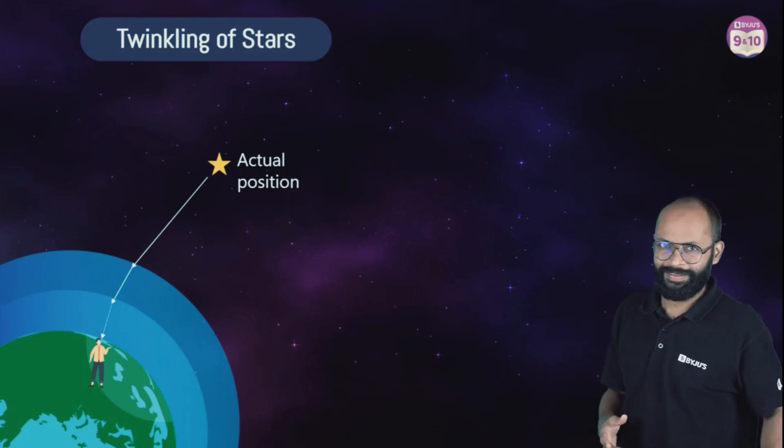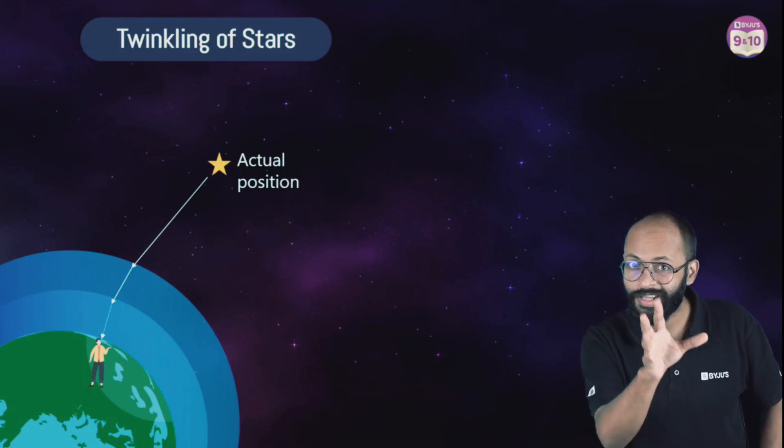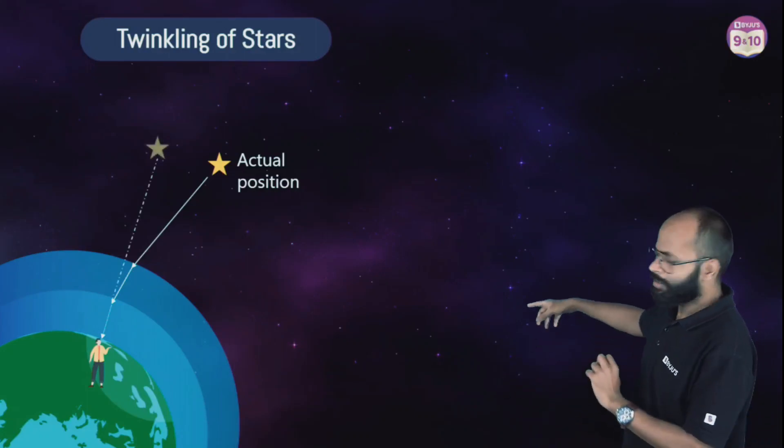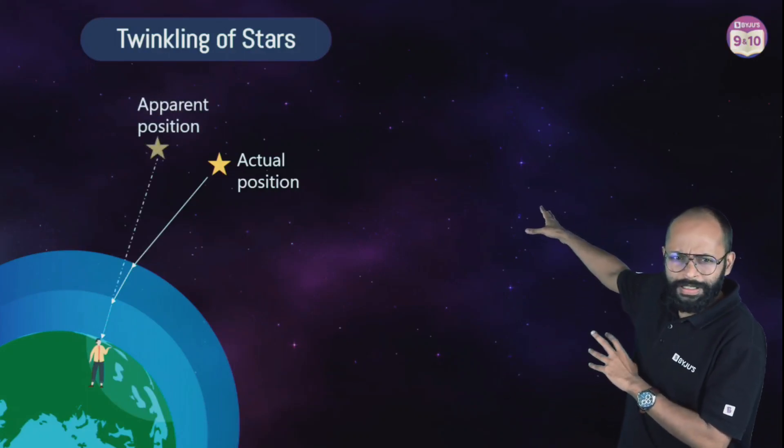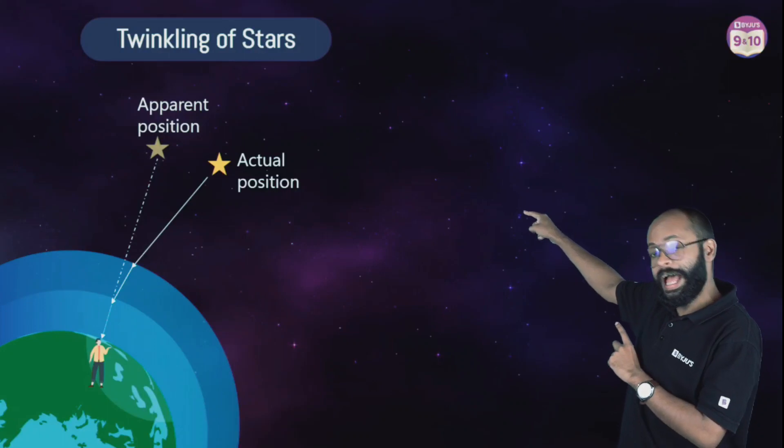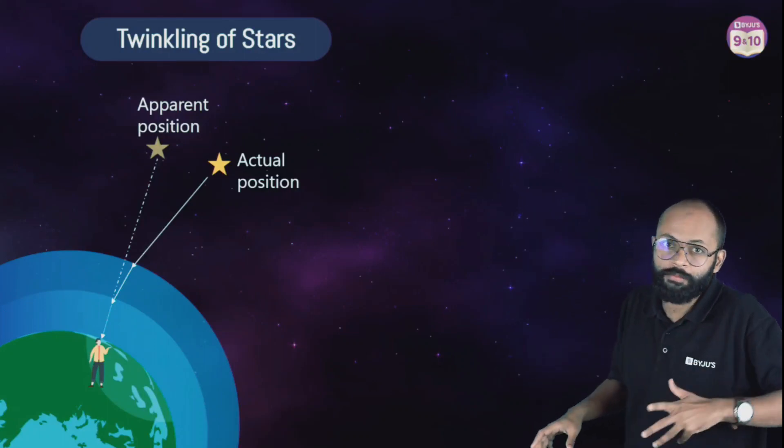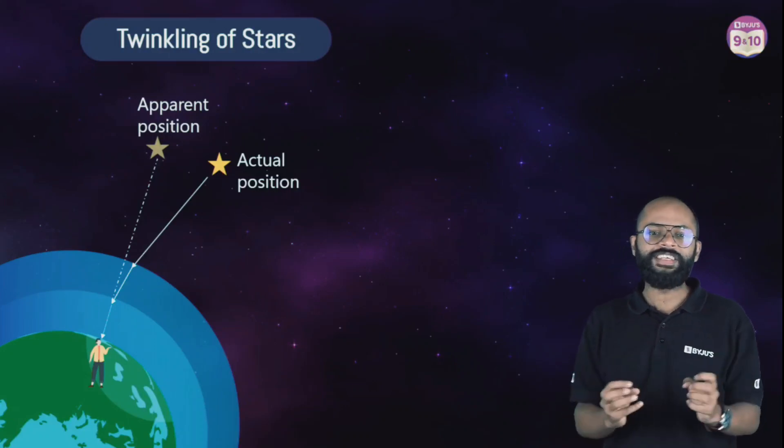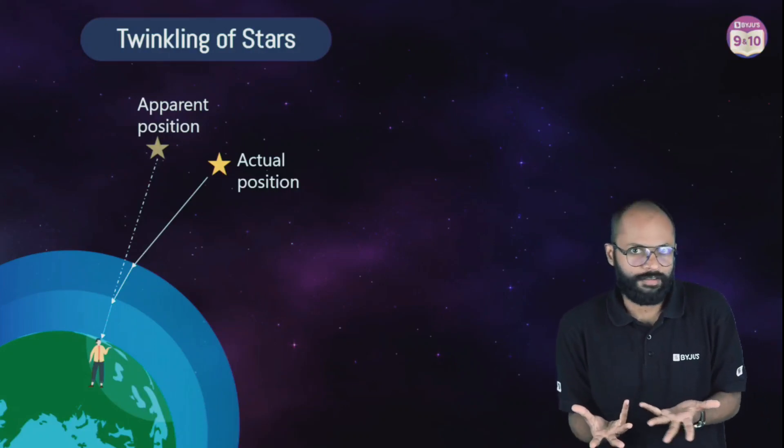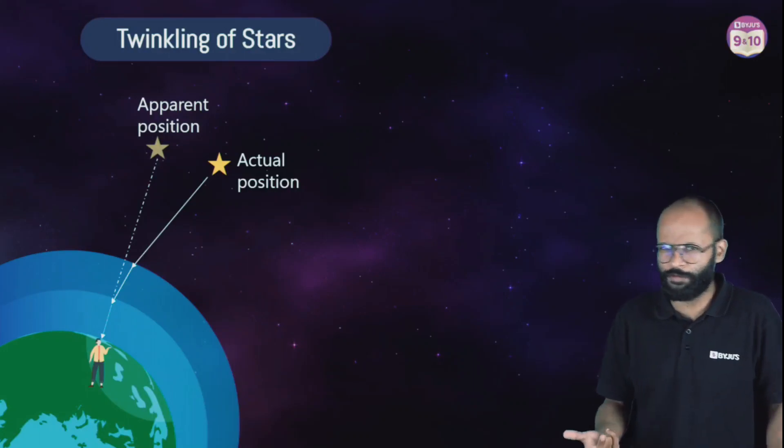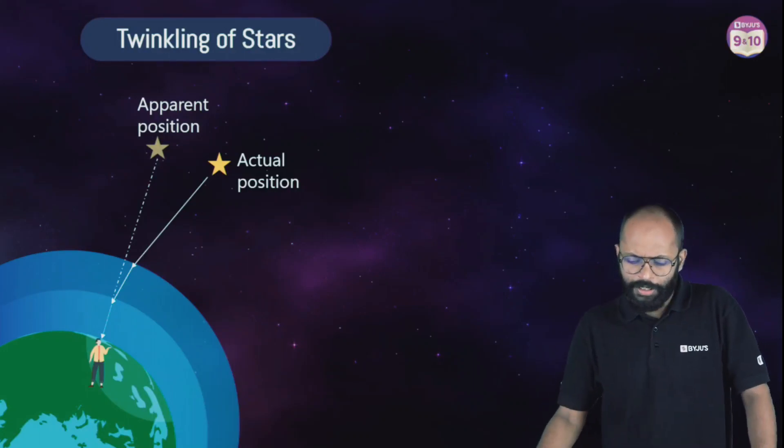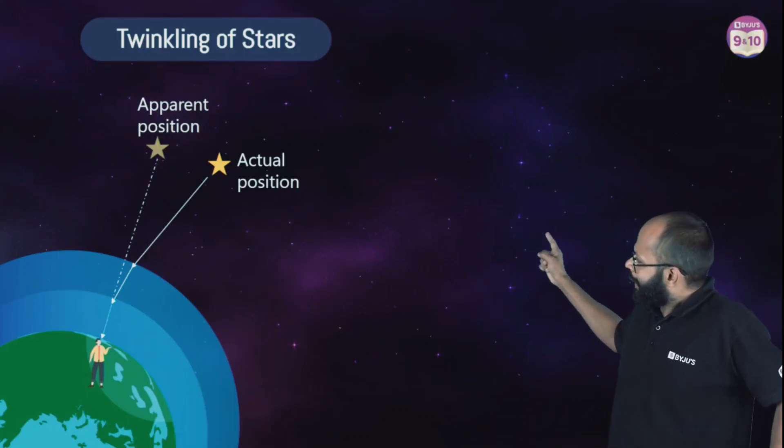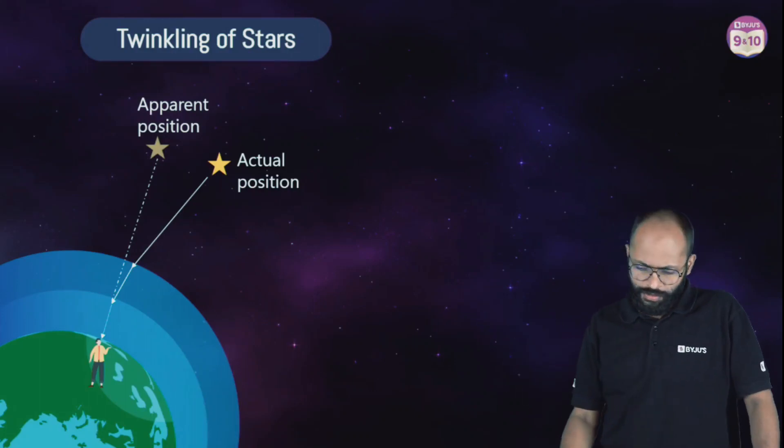So we see a virtual image, an image which is not real. We believe that apparent position is the star, but that's not the case. This is how we see false stars. We see an apparent position of a star, we don't see the actual star. Now think about it, light has to cross all these layers of atmosphere.